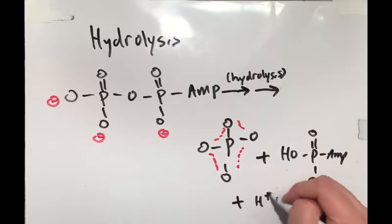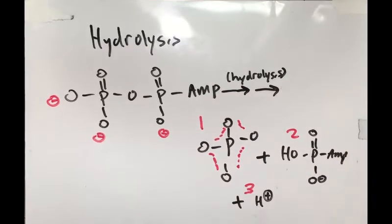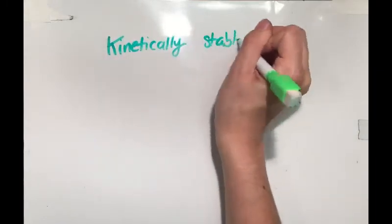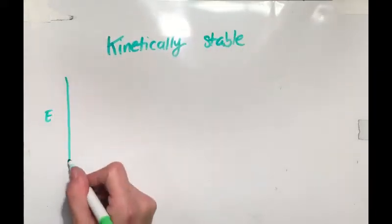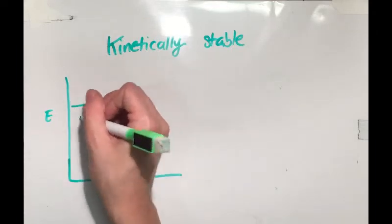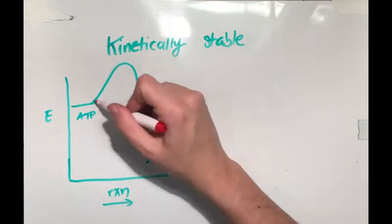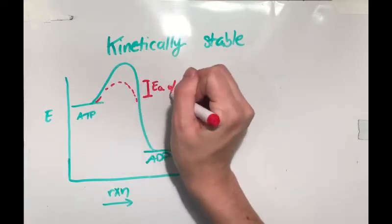So if ATP breaks down spontaneously, how can it exist in its triphosphate form? Well, this is because ATP is kinetically stable with a high activation energy barrier. ATP exists in a very high energy state and its hydrolysis does not occur immediately in the body without the help of enzymes.